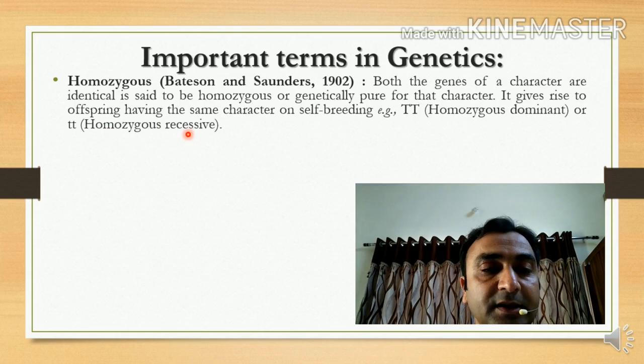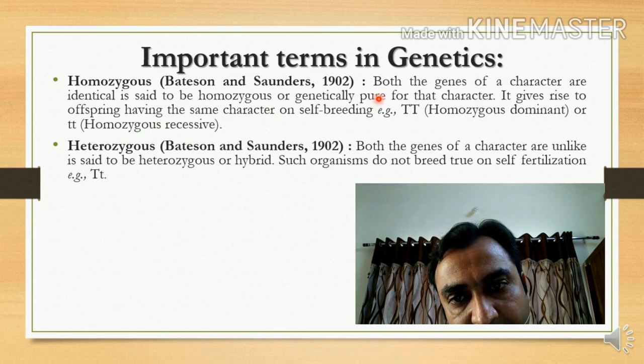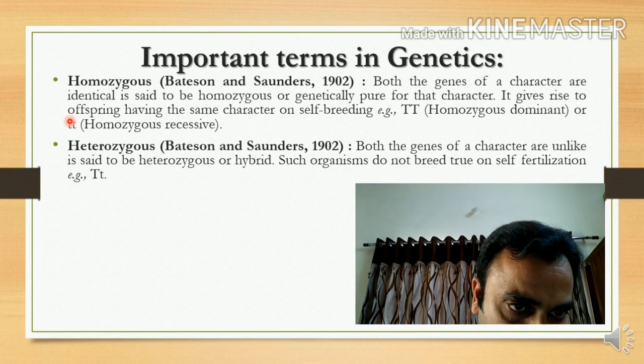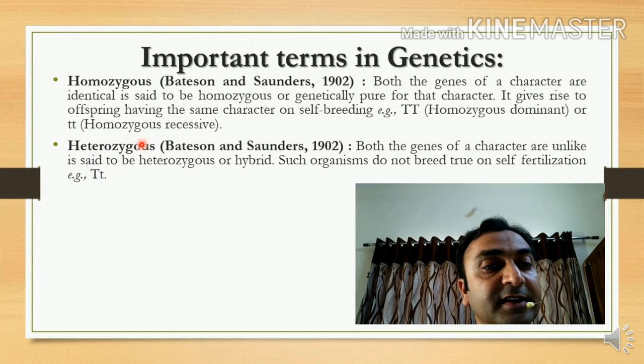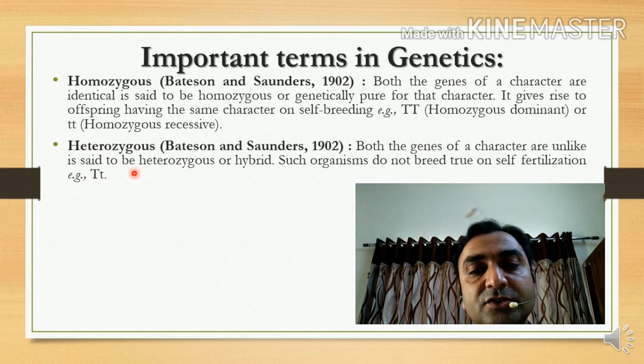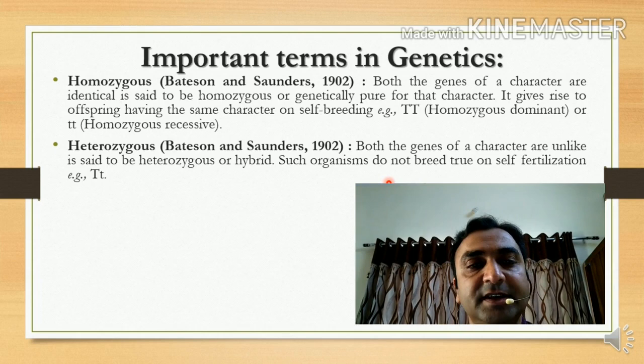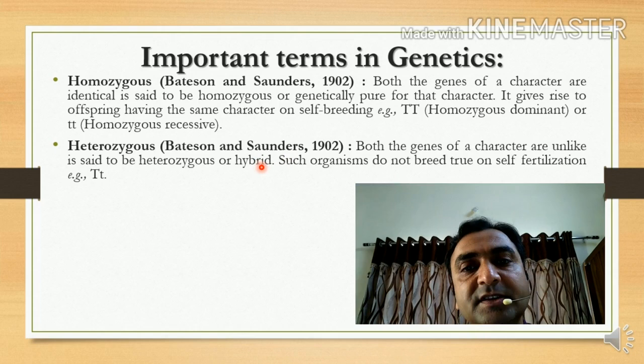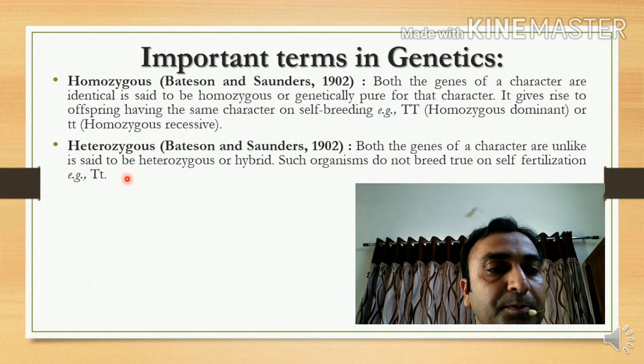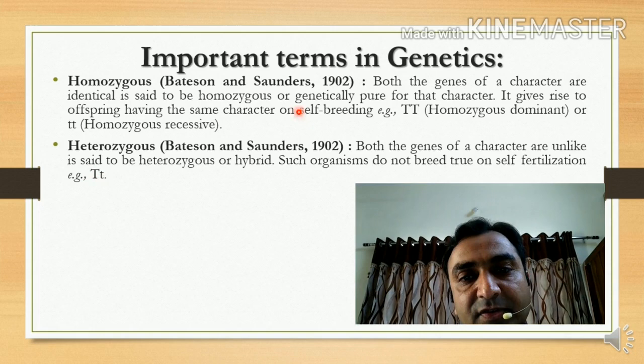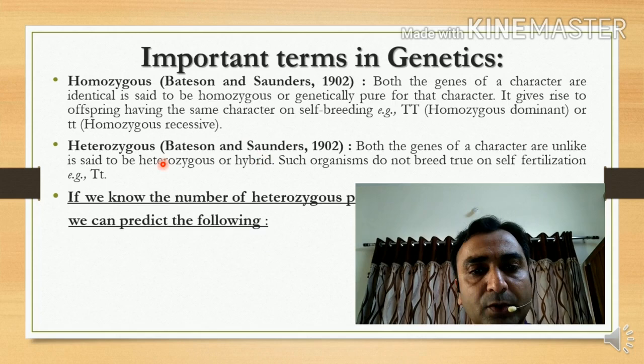The other term is heterozygous. Capital T, capital T is homozygous; small t, small t is homozygous. But if capital T and small t come together — which are not identical, one is capital and one is small — then it is called heterozygous in nature. Both genes of the character are unlike, so it is said to be heterozygous or hybrid. Capital T, capital T is pure because both are similar. Capital T, small t is hybrid because it is not pure — it is a mixture. You must understand the difference between pure and hybrid.